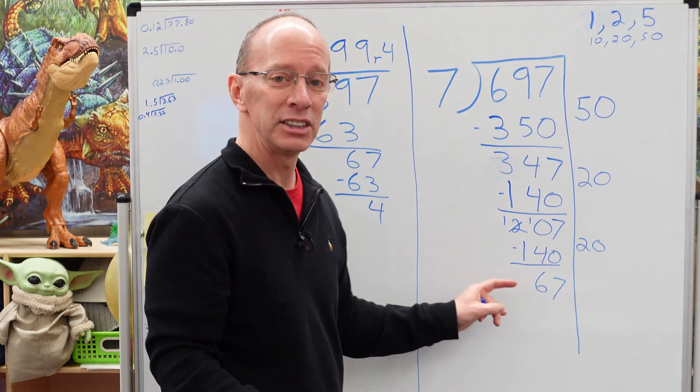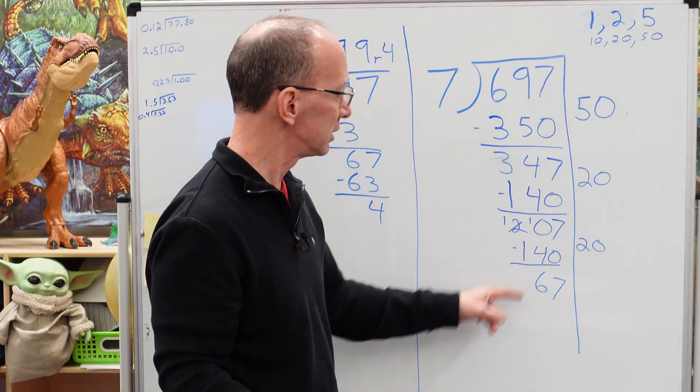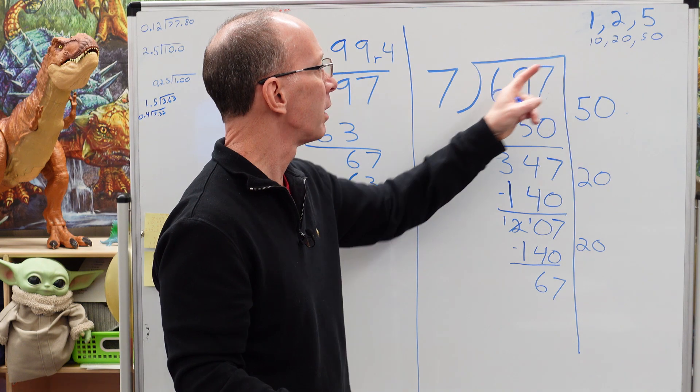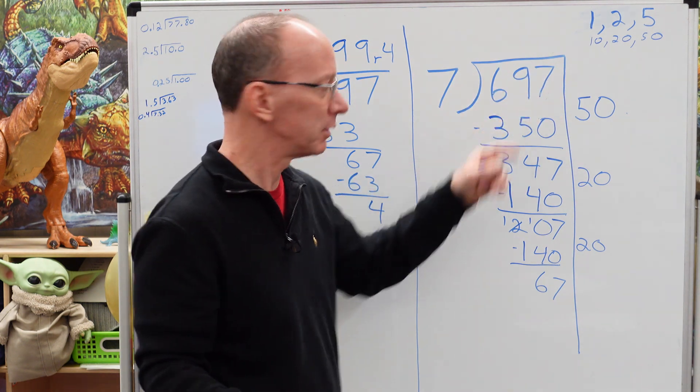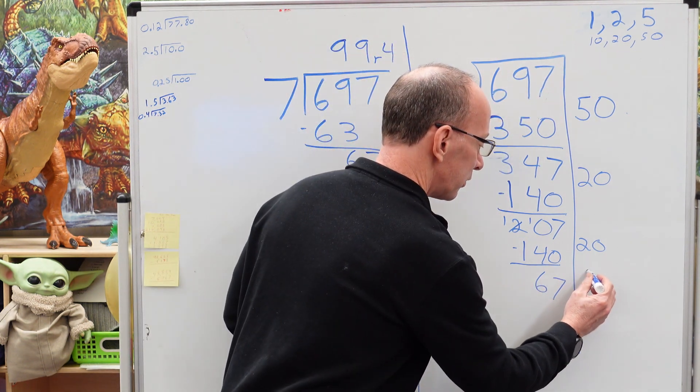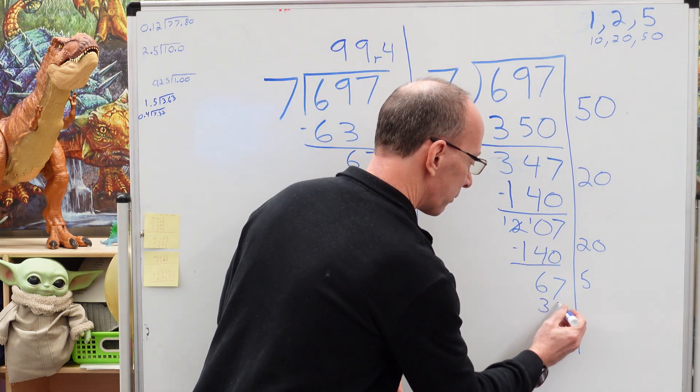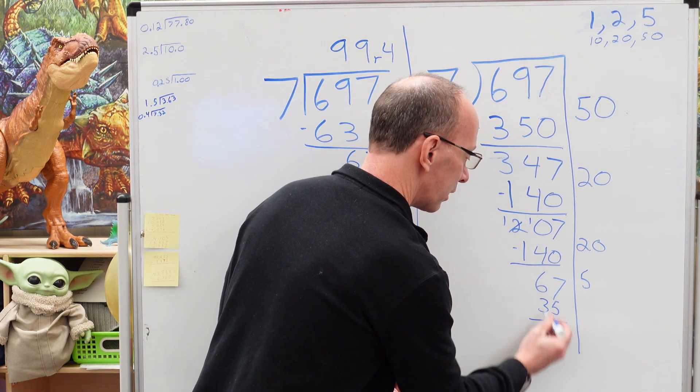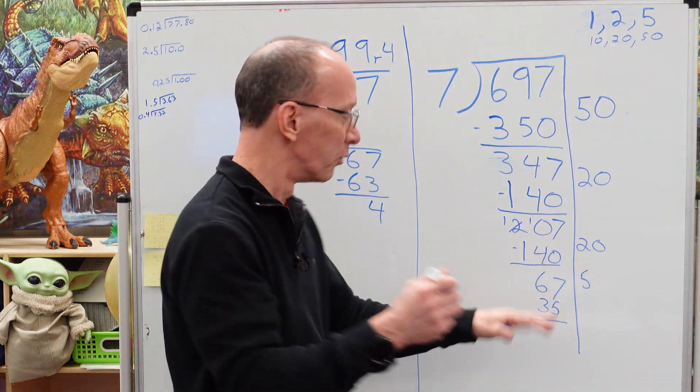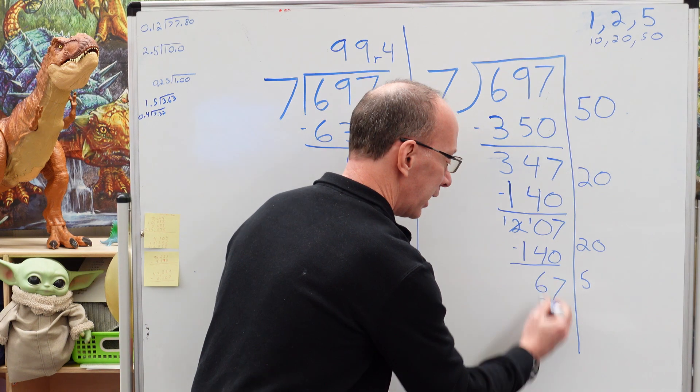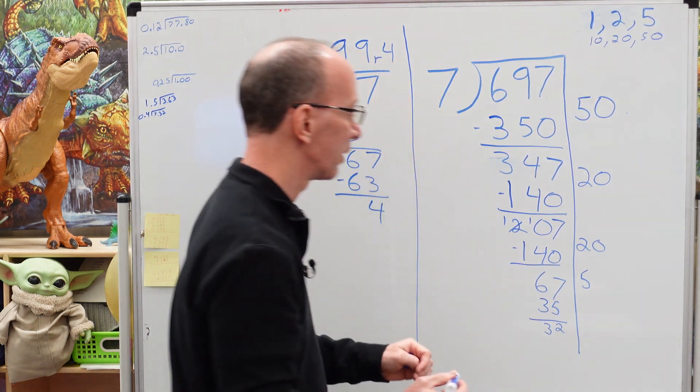How many times can I put seven into 67? I see seven times 10. Nope. What about seven times five? Seven times five would work. I'm going to put five right here. Alright. So that would be 35. Alright. I'm going to start writing a little smaller as I'm running out of space here. And five, six, seven would be two and three.